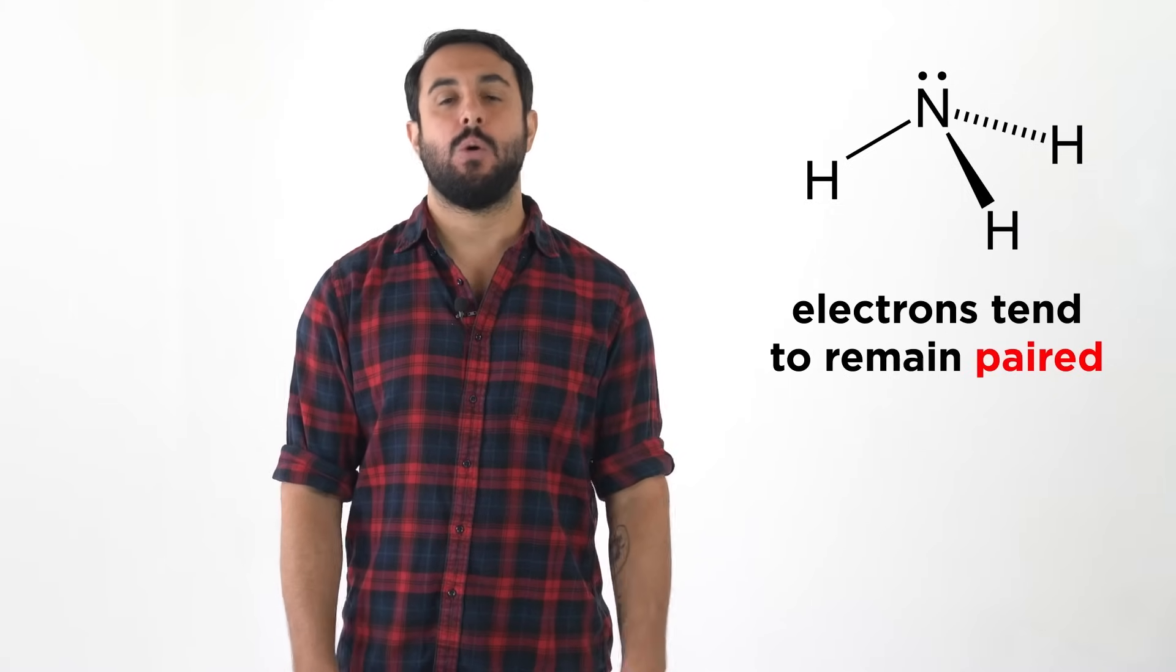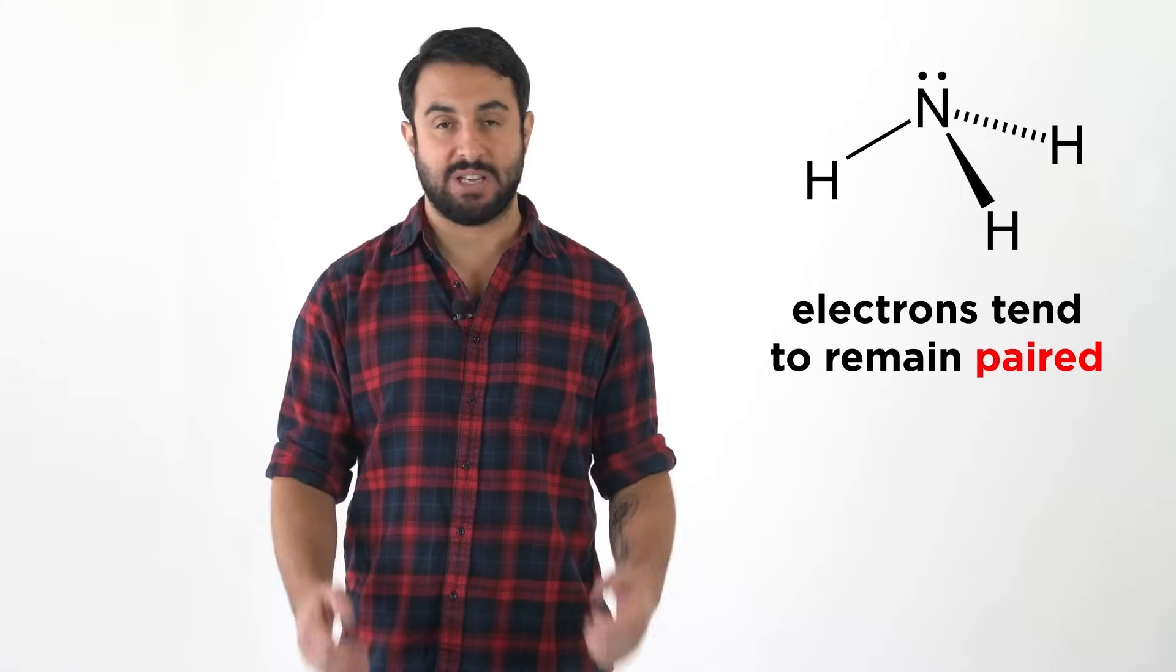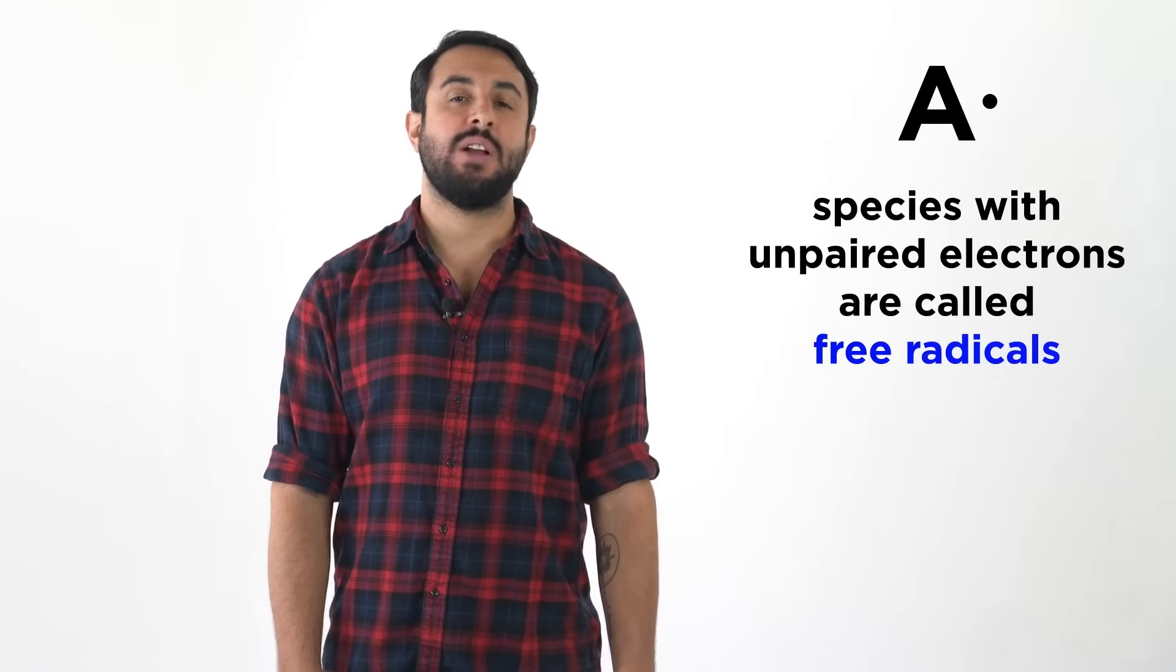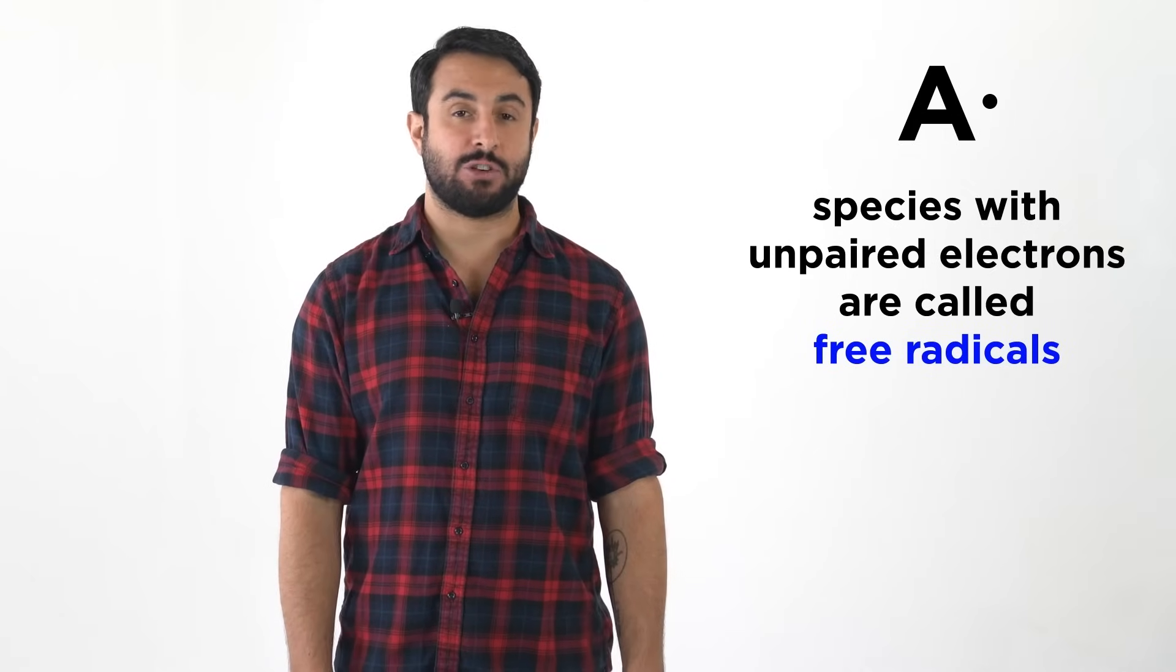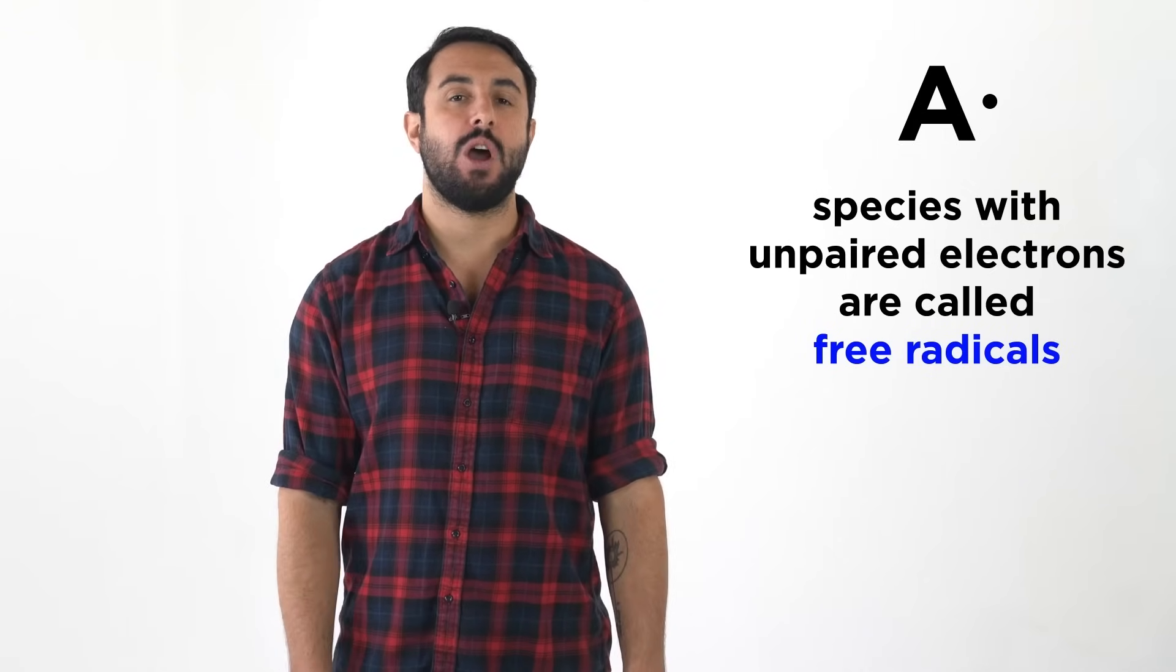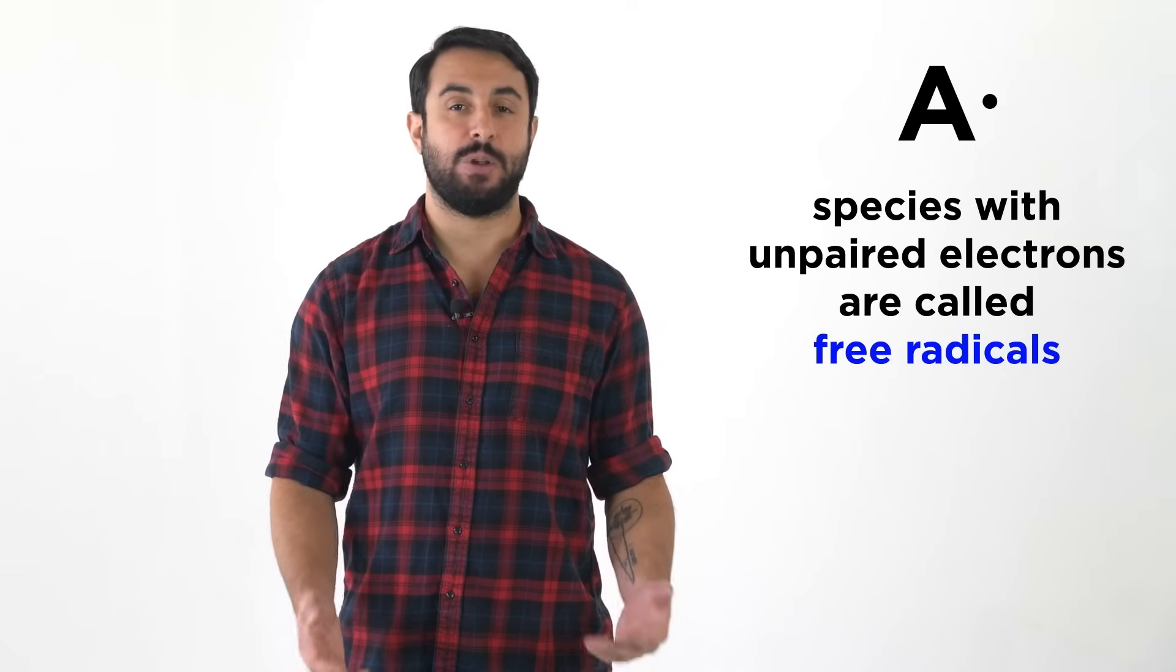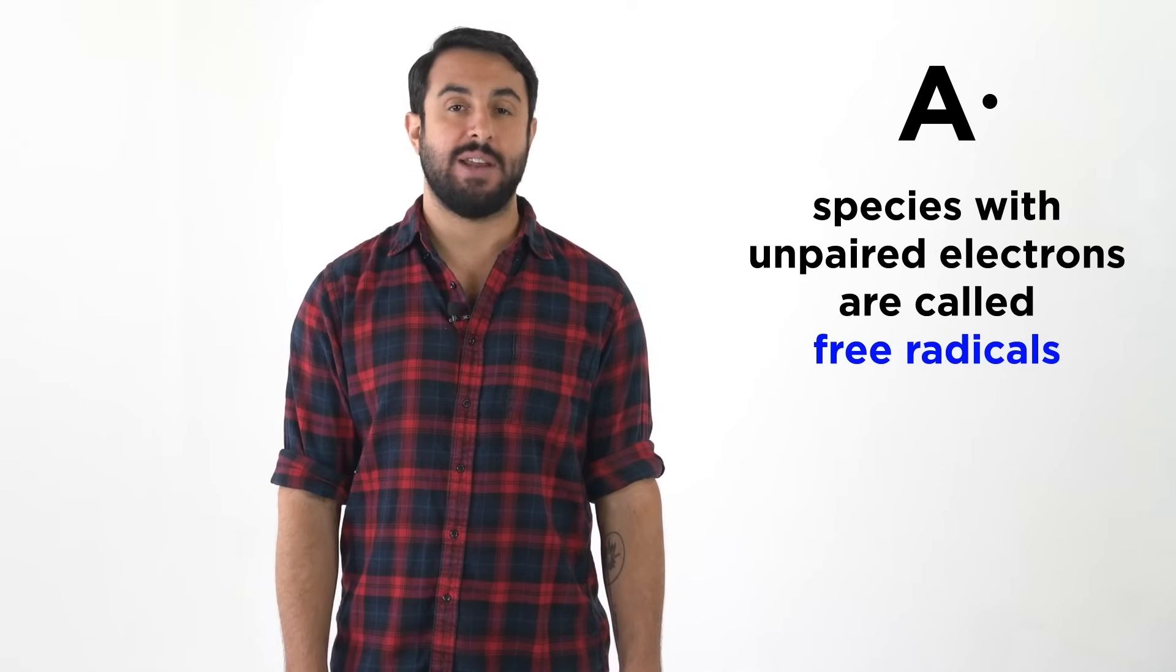Whether in a covalent bond or in a lone pair, we know that electrons don't like to be by themselves. However, electrons can also be unpaired, and species with unpaired electrons are called free radicals. It will be important to know a bit about the properties of free radicals and the reactions they undergo, so let's take a closer look now.